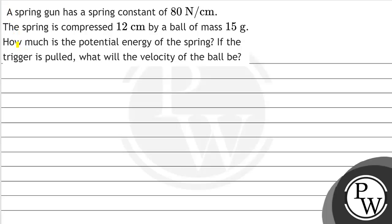Hello, let's read the question. The question here is: A spring gun has a spring constant of 80 newton per centimeter. The spring is compressed 12 centimeters by a ball of mass 15 grams. How much is the potential energy of the spring? If the trigger is pulled, what is the velocity of the ball?